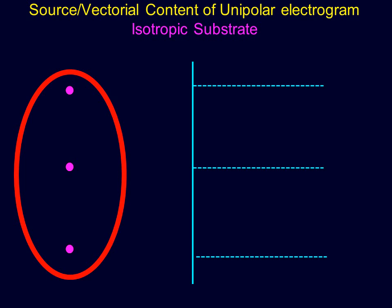This can be seen in a source vectorial content of a unipolar electrogram in an isotropic substrate — meaning uniform conduction velocity. The heart has some areas which are isotropic and several areas which are anisotropic, so it is very difficult to say conduction will be uniform. But if you catch the Bachmann's bundle, which is an isotropic substrate, you might get this kind of spread, and if your unipolar interrogation is from that location, you will end up producing a QS complex.